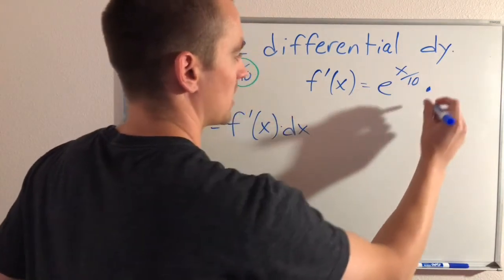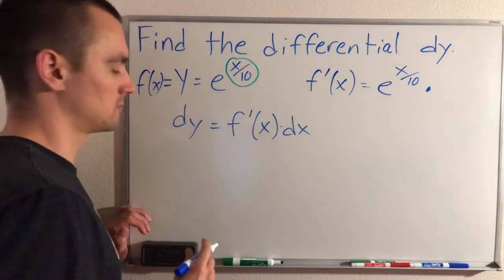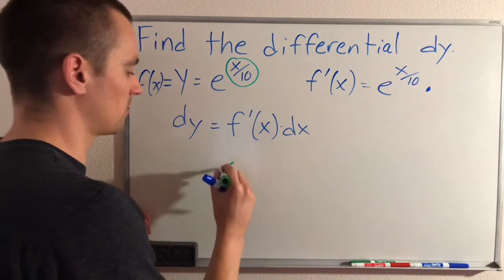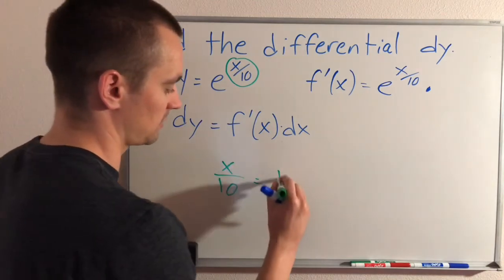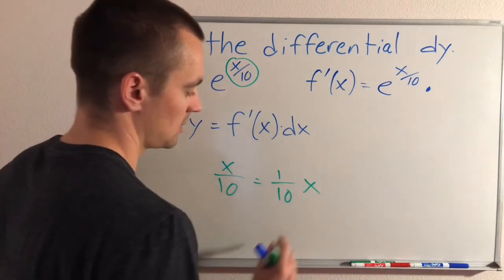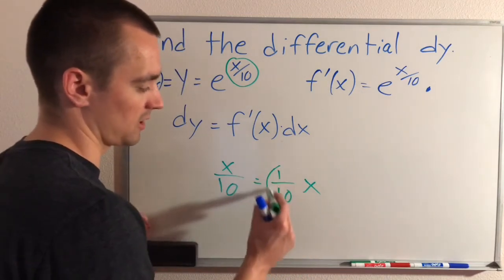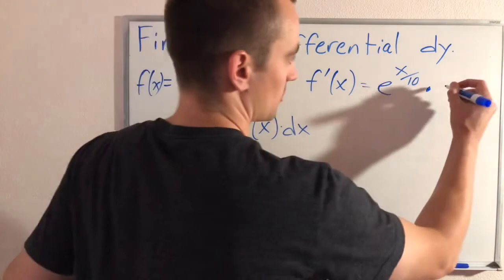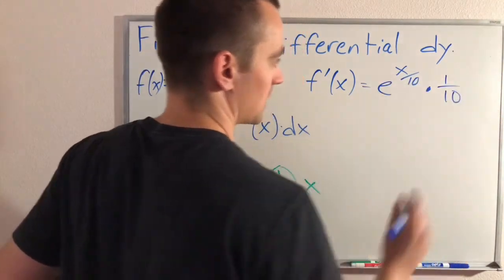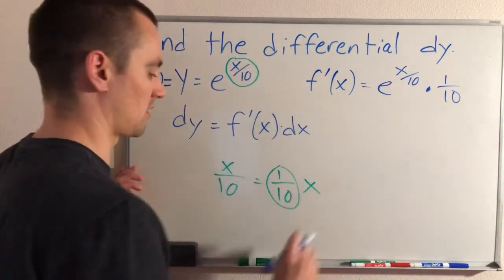And then we'll multiply this by the derivative of our inside. So what you want to do is think of x over 10 as the same as 1 tenth x. The derivative of 1 tenth x, the x would just fall off and you would just be left with 1 tenth. So the derivative of our inside is just 1 tenth. So that is our f prime.